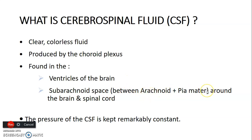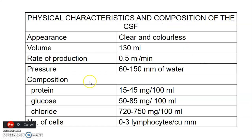The subarachnoid space is between the arachnoid and pia mater, and it surrounds both the brain and the spinal cord. You need to keep the pressure of CSF constant at all times. CSF is found within the ventricle and the subarachnoid space. It's approximately 130 to 150 mils, produced at 0.5 mils per minute, with a pressure of 60 to 150 millimeters of water.